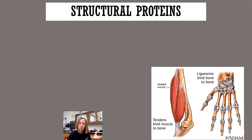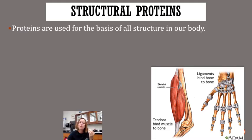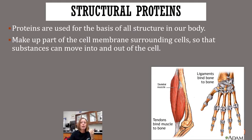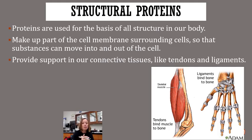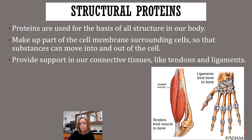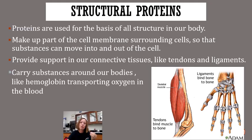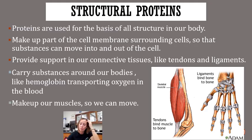The last type of protein is structural proteins — these are the proteins you're more familiar with when you think of protein. They're used for all the structures in our body: they make up parts of the cell membrane so substances can move in and out, they make up our muscles, tendons and ligaments. They're the protein you think of when eating protein — you're actually eating muscle. Structural proteins also carry substances, like hemoglobin moves oxygen in our blood. They make up our muscles so we're able to move — they're the proteins you pretty much see when you look at somebody.